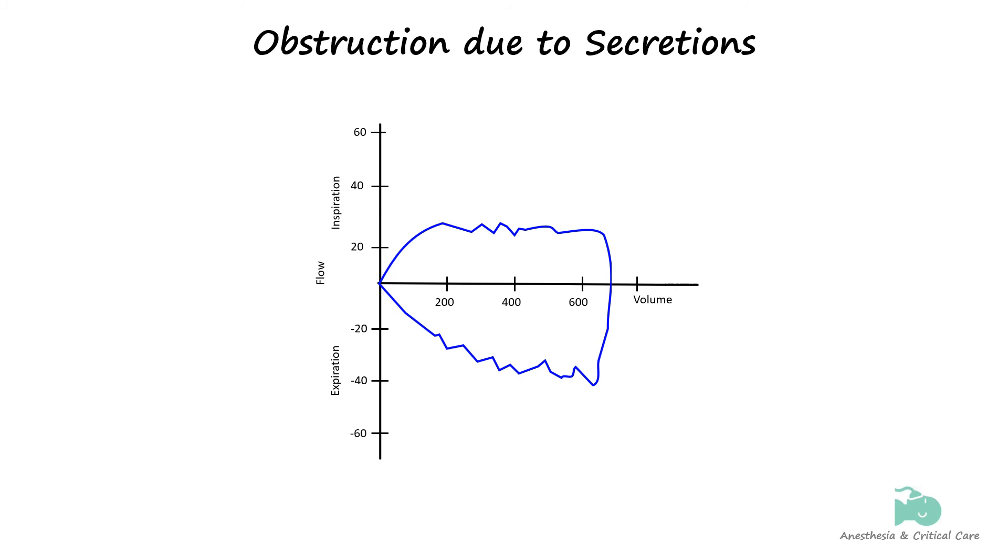Airway resistance as a result of obstruction due to sputum or secretions is recognized by the sawtooth appearance of the loop. A smoother loop verifies that the suctioning of secretions has cleared the obstruction.